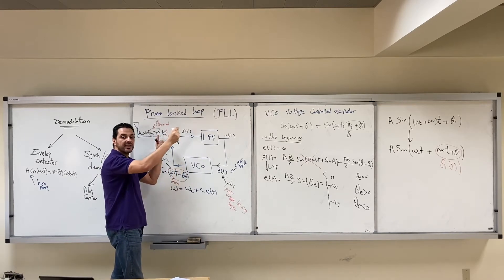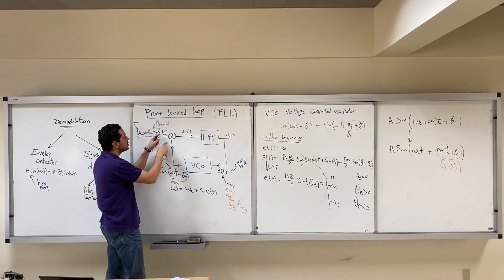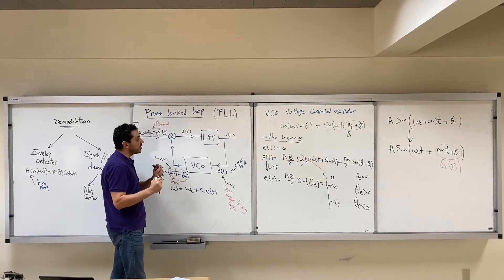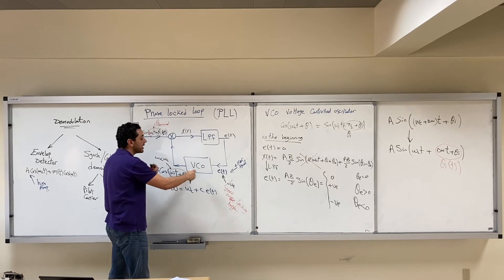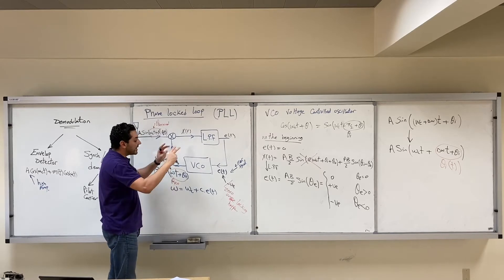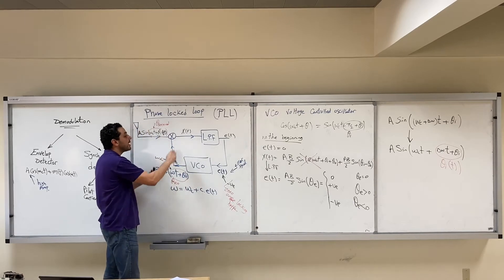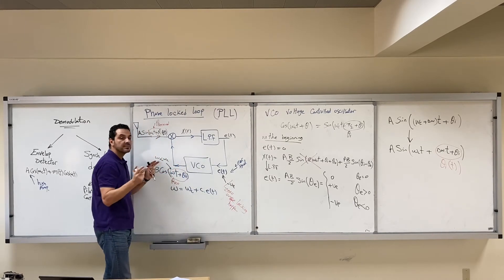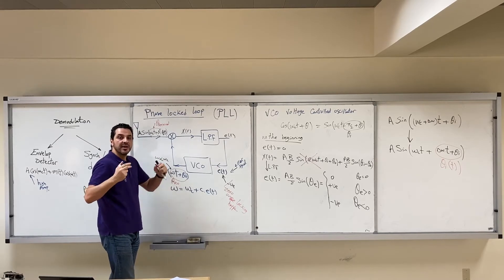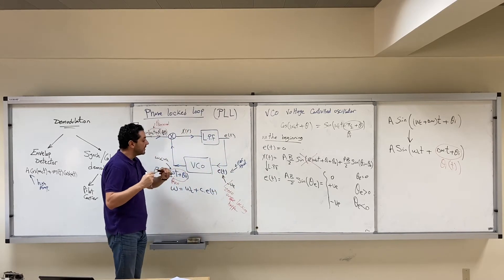If theta_i suddenly increases, the error signal will be positive, asking the VCO to increase speed to catch the phase. When theta_i decreases below theta_naught, the error signal will be negative, asking the VCO to slow down. So the same explanation for the PLL for a fixed theta_i applies exactly for theta_i(t) that is changing with time.